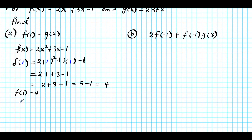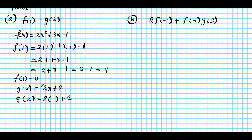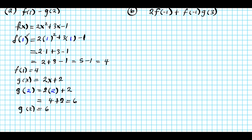To find g of 2, recall g of x equals 2x plus 2. Plugging in 2 for x: g of 2 equals 2 times 2 plus 2, which equals 4 plus 2 equals 6. Now we can compute f of 1 minus g of 2, which equals 4 minus 6 equals negative 2.